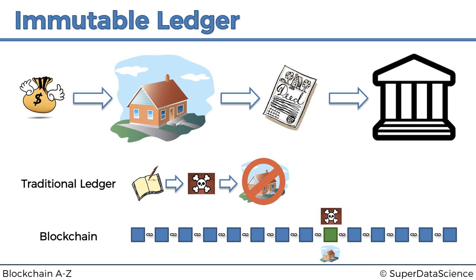If this person tries to tamper with the data in that specific block, that will change the hash of that block. The cryptographic link will no longer work because the hash here is different from the hash recorded for the previous block. Remember, we have the 'previous hash' field — it will no longer match. So this person would have to change this block as well. But as soon as they change this block, it won't match the next one, and they'd have to change that one too.